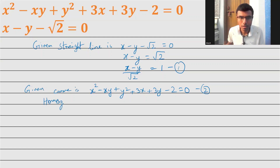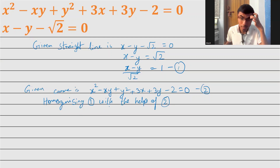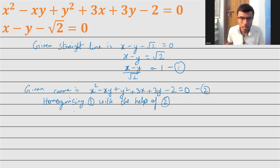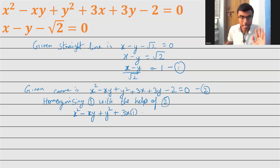Now, homogenizing equation 1 with the help of equation 2. I'm writing the given equation again: x squared minus xy plus y squared plus 3x into 1 plus 3y into 1 minus 2 into 1 whole squared is equal to 0.